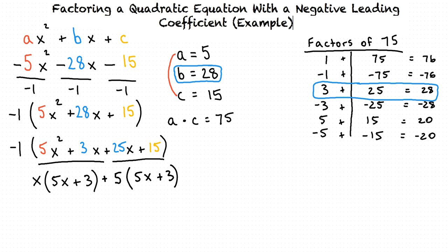We also cannot forget that we still have a negative 1 sitting out in front of the entire equation. From here, we can determine our final factorization. Our first factor will be the term inside the parentheses, so in our case, it's 5x plus 3. And our second factor will be the two terms that are left over, which we have sitting out in front of our parentheses. In our problem, these are x and plus 5. And of course, we cannot forget about our negative 1 sitting out in front still.